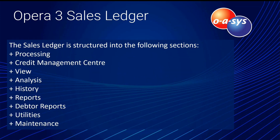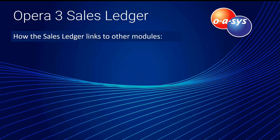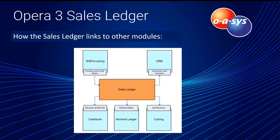The sales ledger is structured with a processing area including the Credit Management Centre if you have it on your license, plus views, analysis, history, reports, data reports, utilities, and maintenance. The sales ledger links to sales order processing or invoicing, CRM for shared customers and contacts, the cash book for sales receipts, the nominal ledger for sales postings, and costing if you have the costing module.